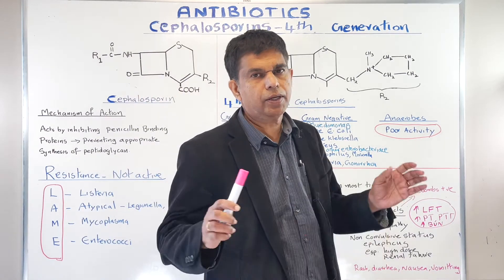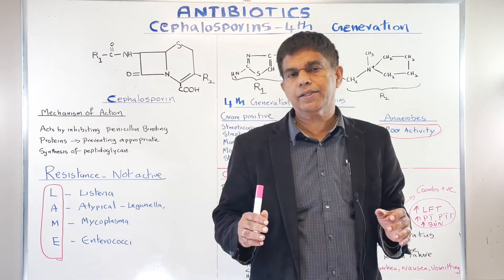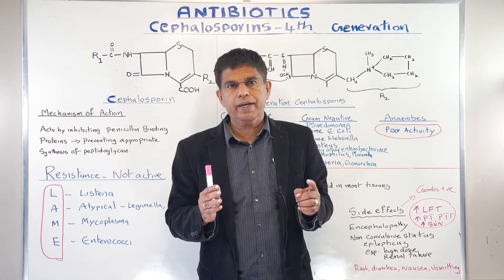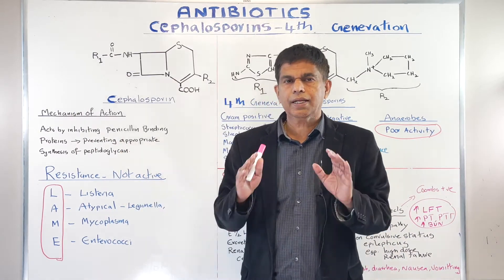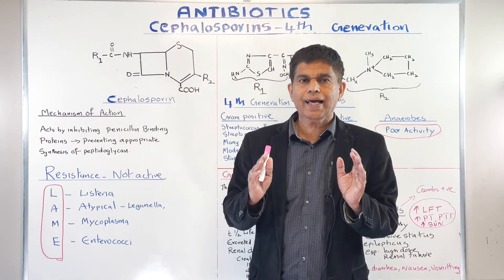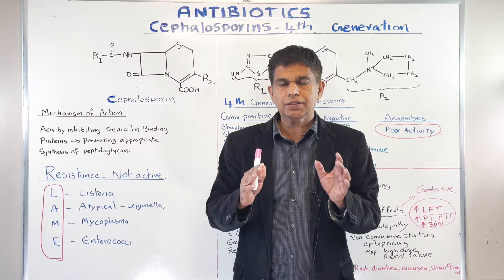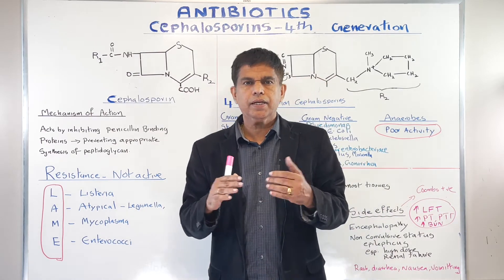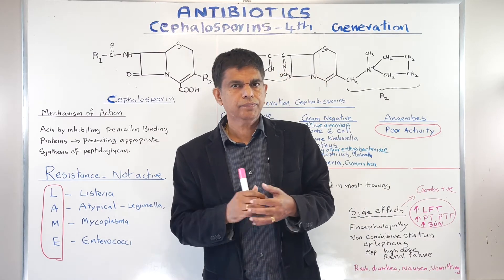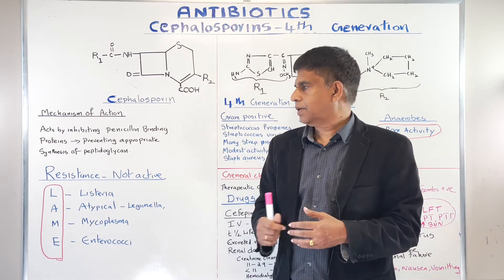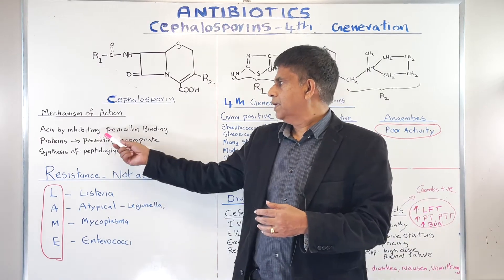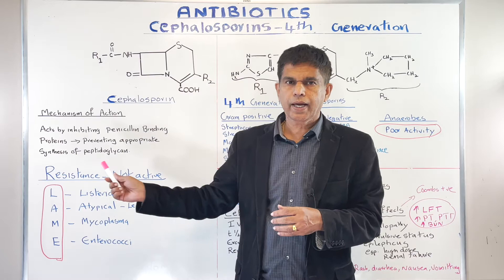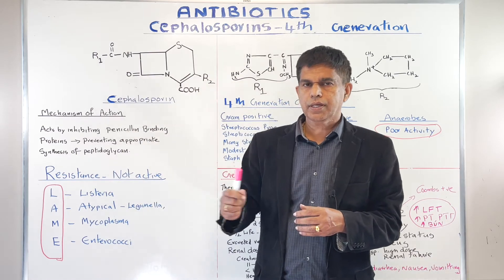Now let's look at the mechanism of action. It inhibits the penicillin-binding protein. What happens is peptidoglycan synthesis in the cell wall is affected, so the bacteria cannot survive. The key things to remember: it inhibits the penicillin-binding protein and the peptidoglycan cell wall is affected.